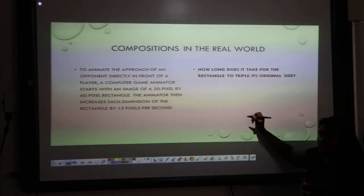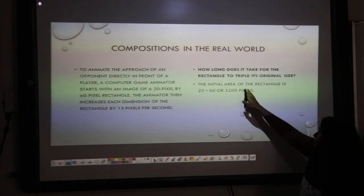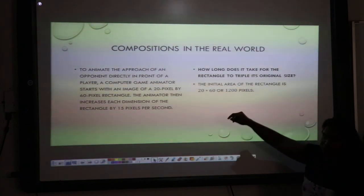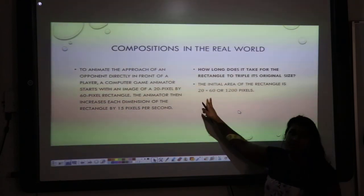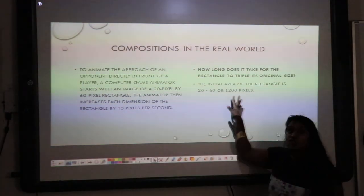I take my composition, A. Oh, well, we started somewhere a little bit different. Sorry. The initial area of the rectangle is 20 times 60. Because we were given that information. Which is 1200 pixels.